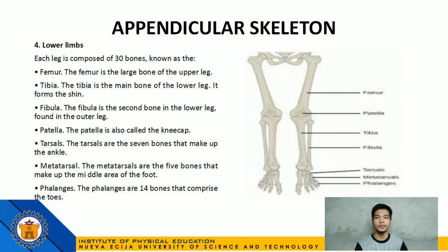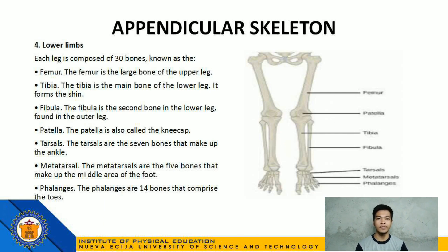Number 4: Lower limbs. Each leg is composed of 30 bones, including the femur, the large bone of the upper leg; the tibia, the main bone of the lower leg that forms the shin; the fibula, the second bone in the lower leg found on the outer leg; the patella or kneecap; the tarsals, 7 bones that make up the ankle; the metatarsals, 5 bones that make up the middle area of the foot; and the phalanges, 14 bones that comprise the toes.